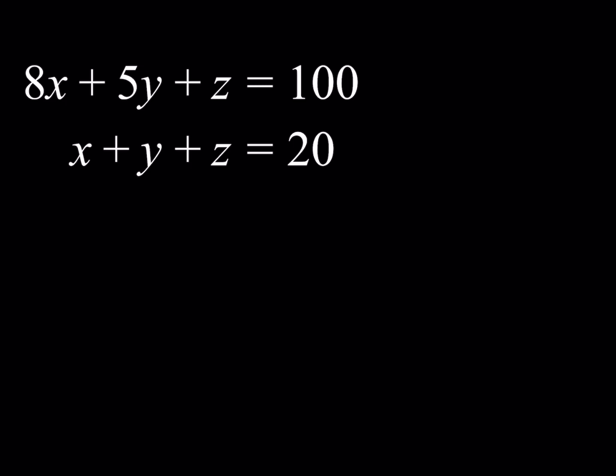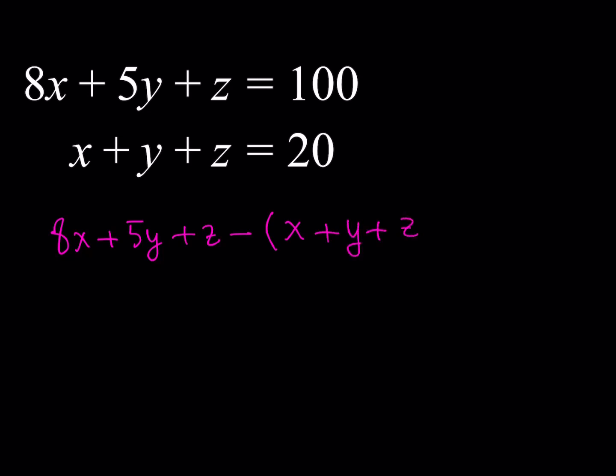We're going to subtract these two equations because z will be eliminated. If you subtract 8x plus 5y plus z minus x plus y plus z, you'll end up with 80. The z cancels out, and we have 7x plus 4y equals 80.